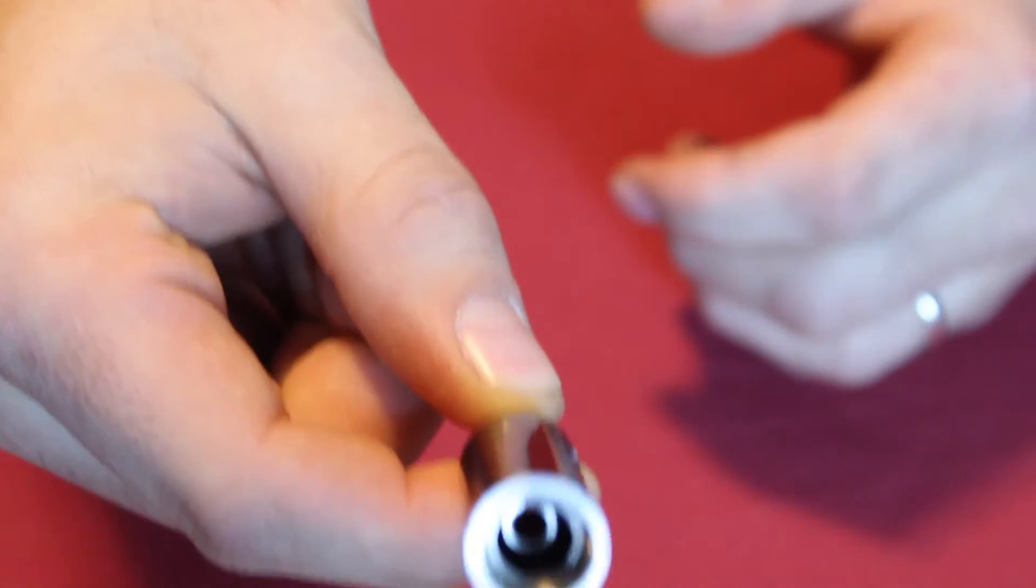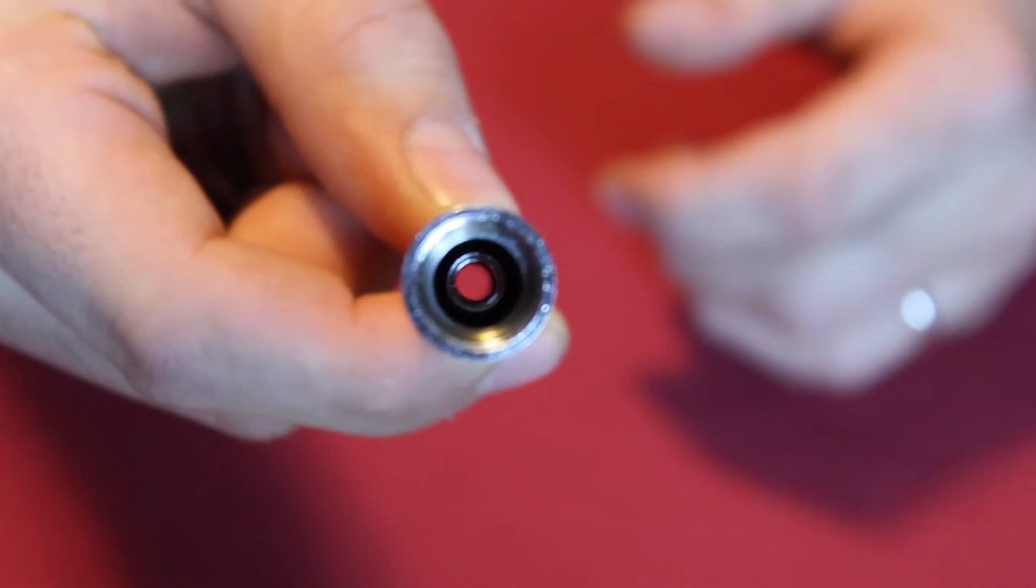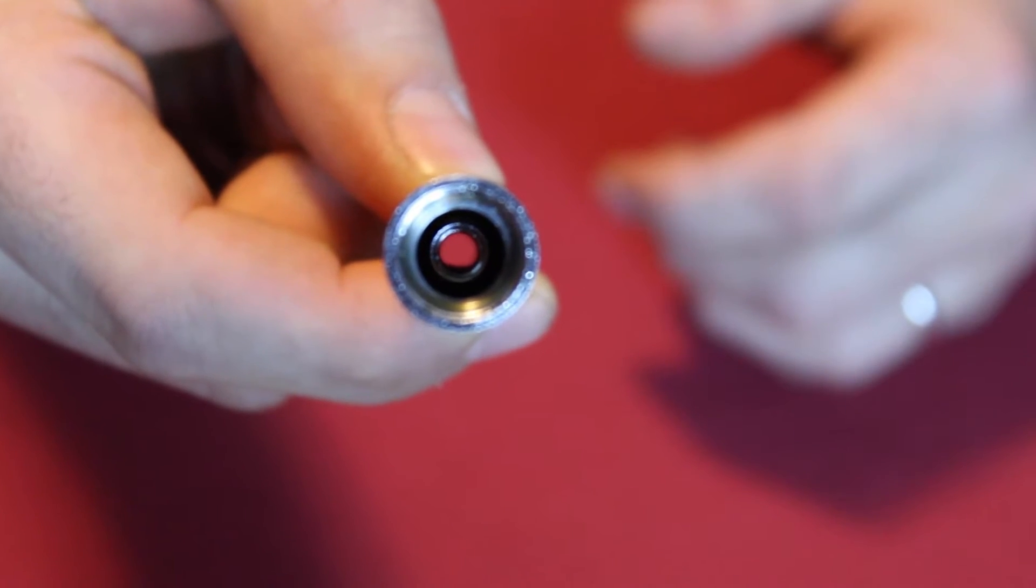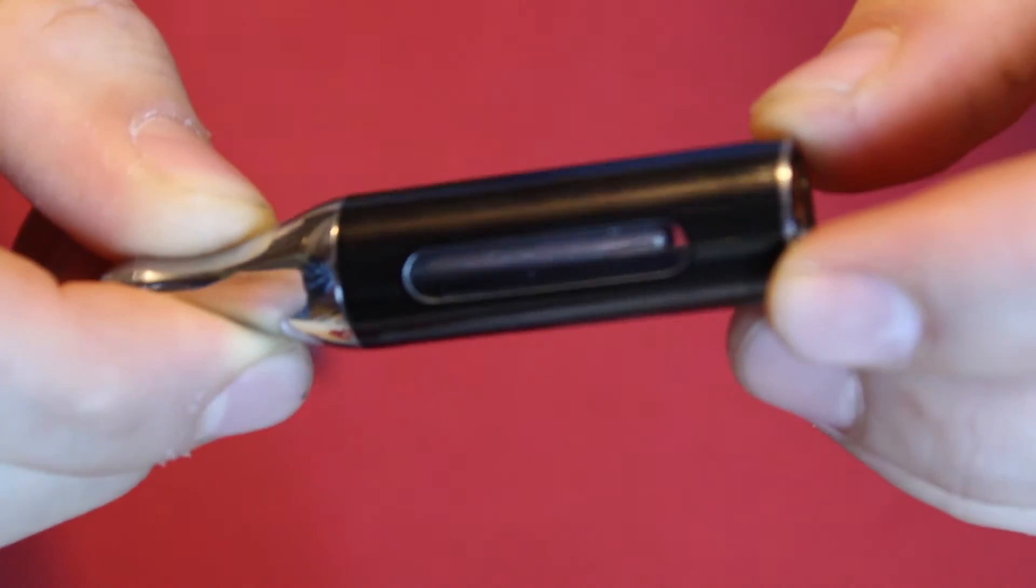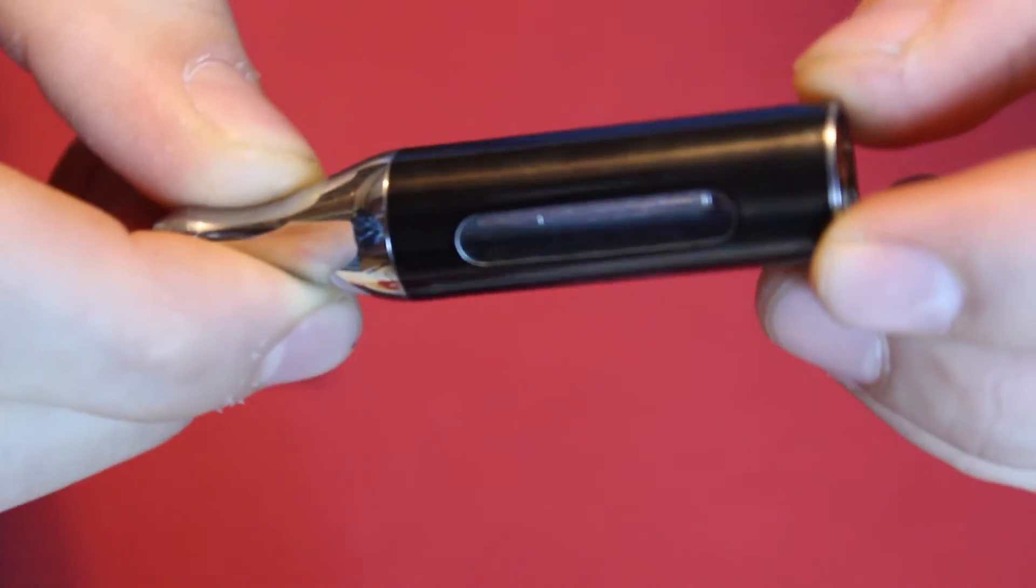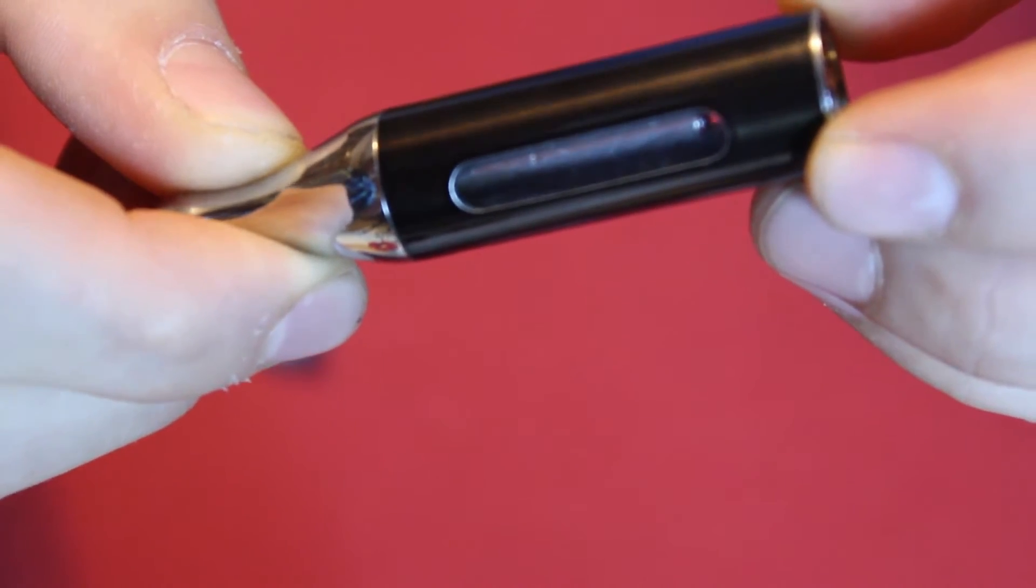And just like the Kanger, there is a center pin that's a straight shot to the mouthpiece. You want to avoid that when filling up. So you want to pour down the side and use the window as a guide. You can see that center pin right there. You don't want to overfill past that line.